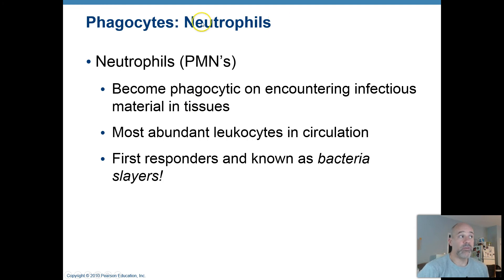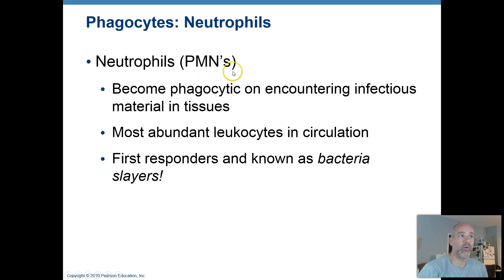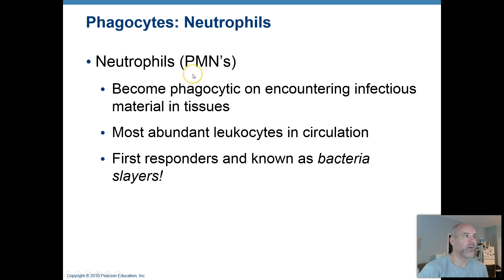Then you have your neutrophils. I put PMNs here just to remind you that some people call neutrophils PMNs — that stands for polymorphonuclear cell. If you remember from chapter 17, they have that weirdly shaped nucleus that almost looks like a string of balloons or sausages. Your neutrophils are the most abundant leukocytes in your bloodstream.